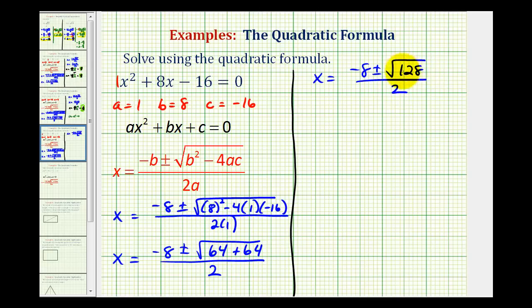And the next step is to simplify the square root of 128. The square root of 128 is equal to the square root of 64 times 2. And 64 is a perfect square. So this simplifies to 8 square root 2.